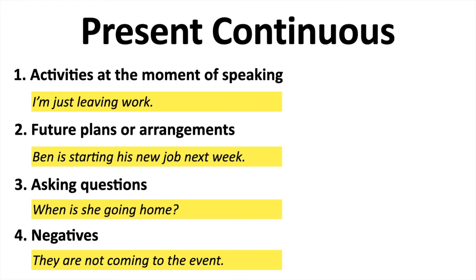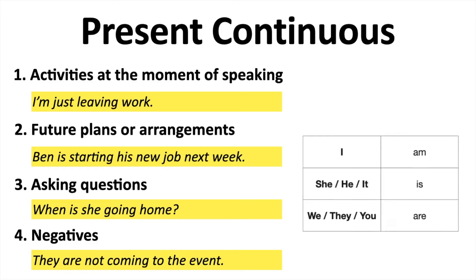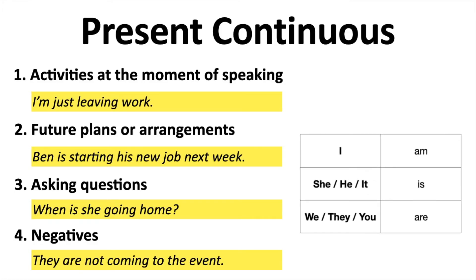It's important to remember that when using the subject 'I', you must use 'am'. When using the subject 'she', 'he', or 'it', you must use 'is'. And when using the subject 'we', 'they', or 'you', you should use 'are'.